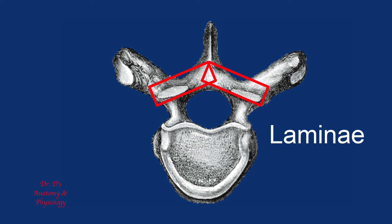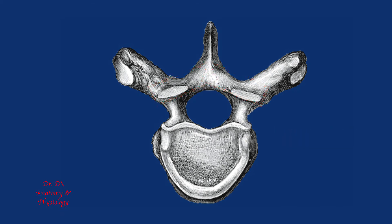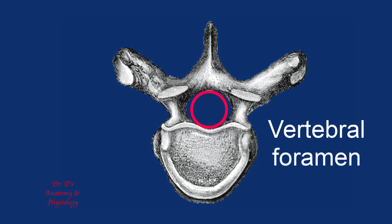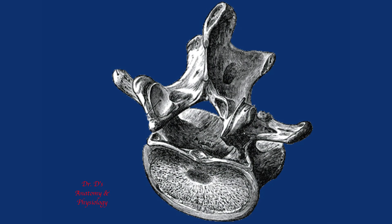The pedicles and the laminae together form our arch. But why is this an important component of the vertebra? The arch forms a passageway — an opening referred to as the vertebral foramen. This opening allows an important element of the central nervous system to pass through it: the spinal cord. The spinal cord is nervous tissue; it is very delicate and needs to be protected, so it is protected in this bony encasement formed by the vertebral arch. It is not just one vertebral arch but a series of arches through which the spinal cord passes. As you go through a series of arches, you're going through what could be referred to as an arcade — an arcade of arches.